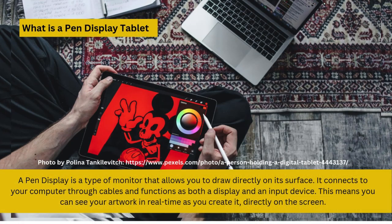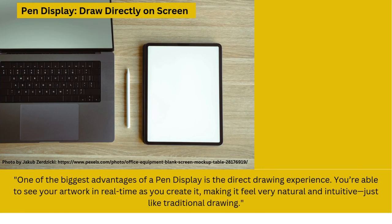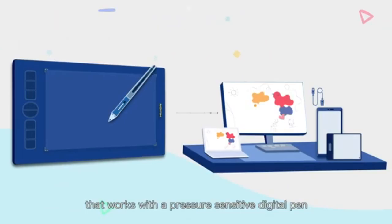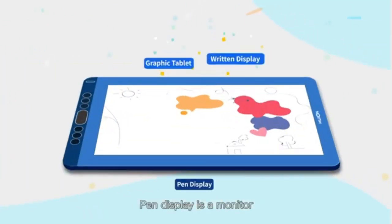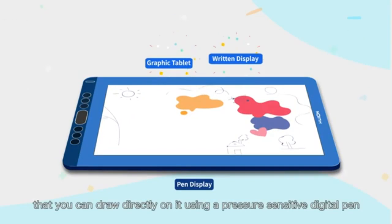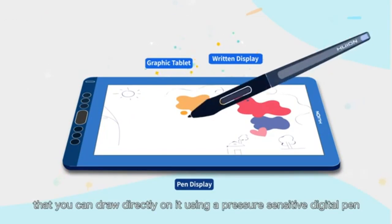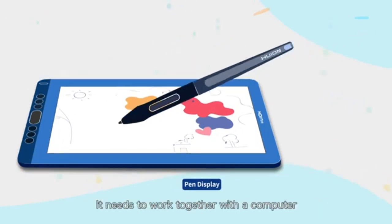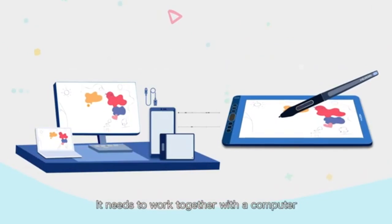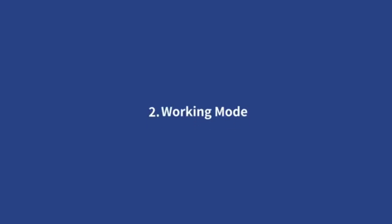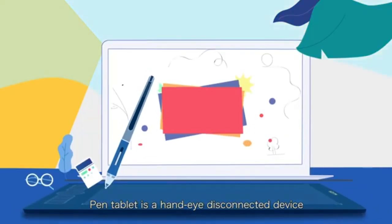First up, let's talk about pen displays. Think of a pen display as a high-tech monitor that you can draw directly on. It connects to your computer and acts as both a screen and a drawing surface. One of the biggest advantages of a pen display is the direct drawing experience. You're able to see your artwork in real time as you create it, making it feel very natural and intuitive, just like traditional drawing.